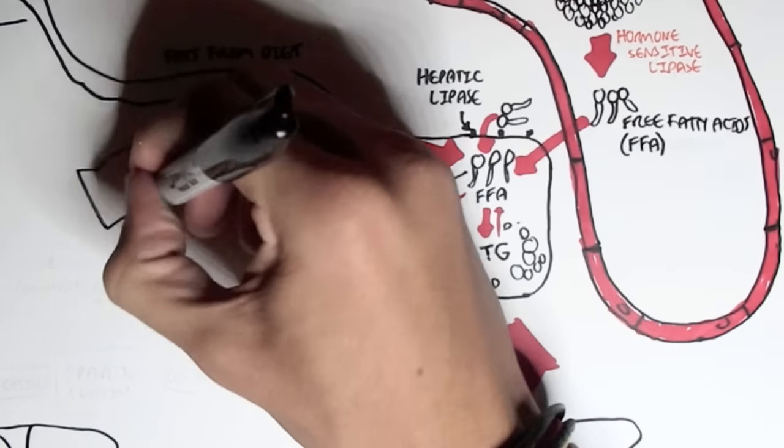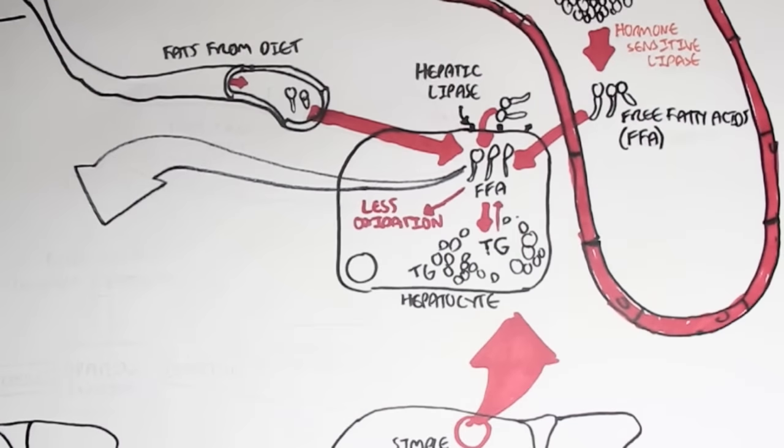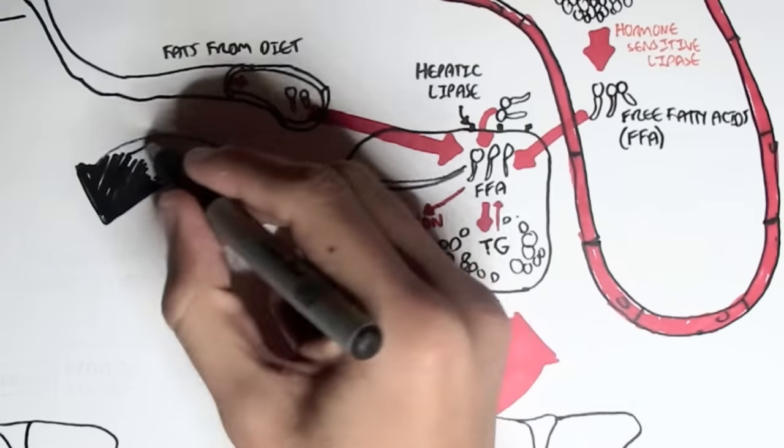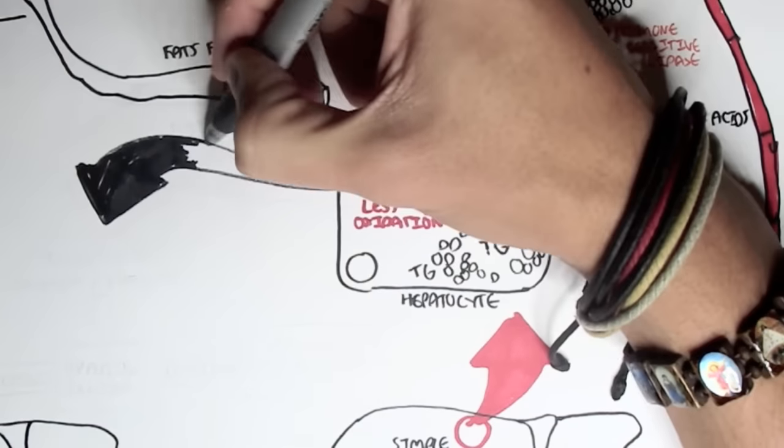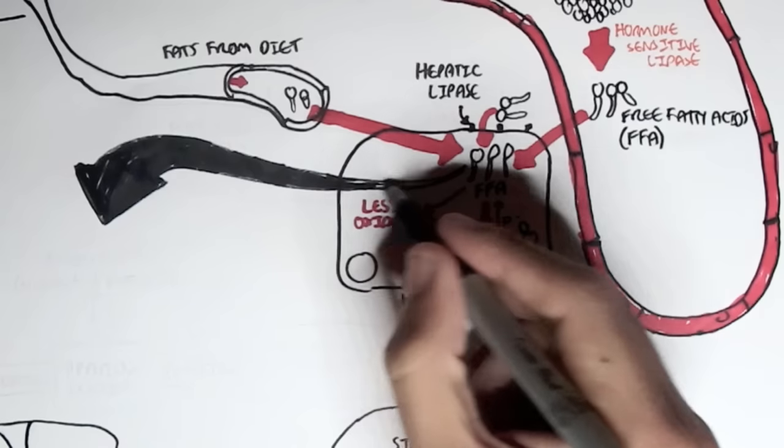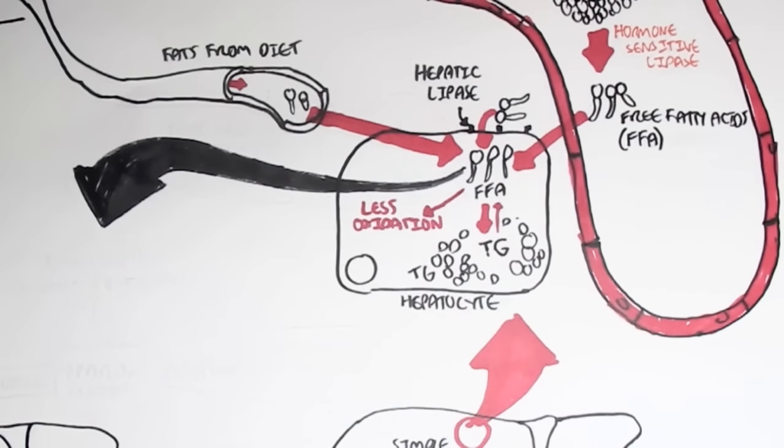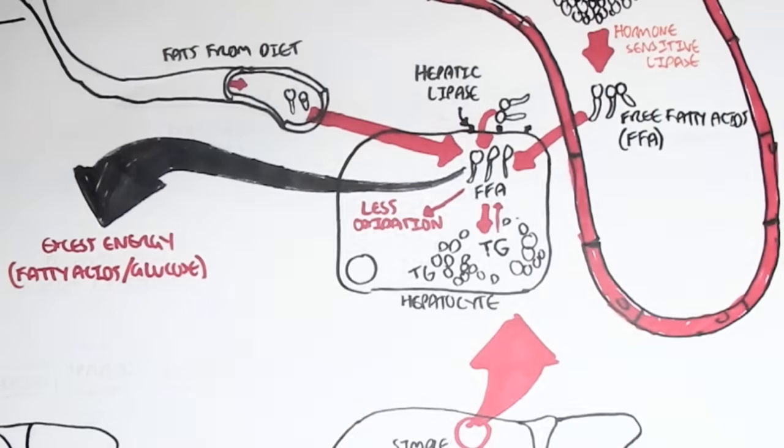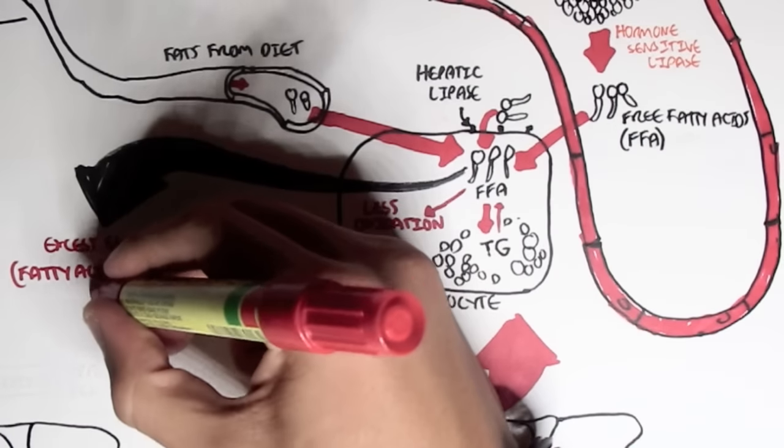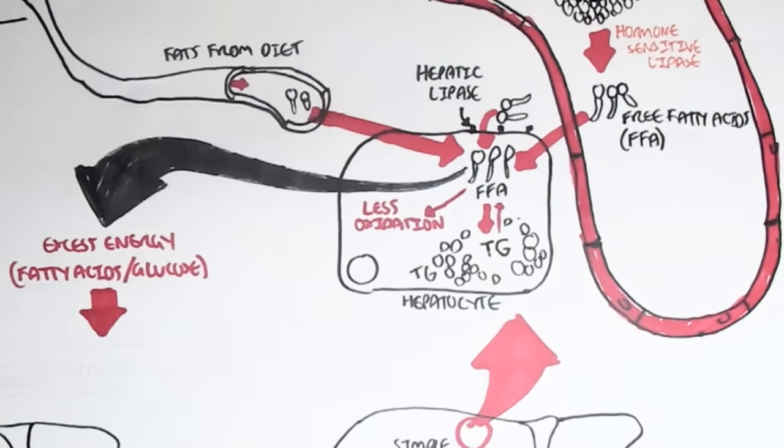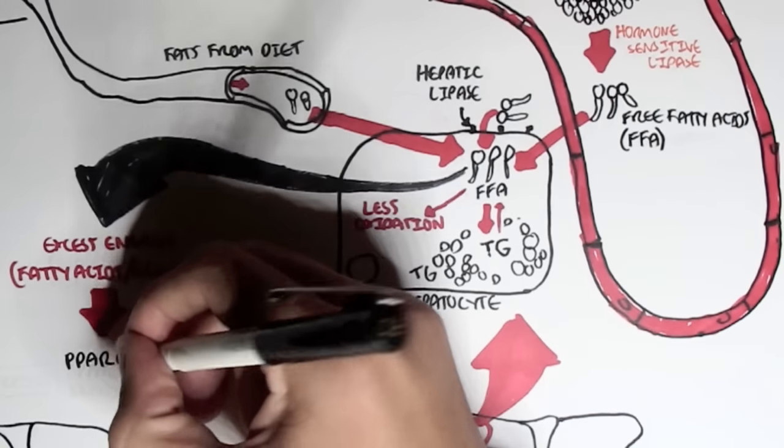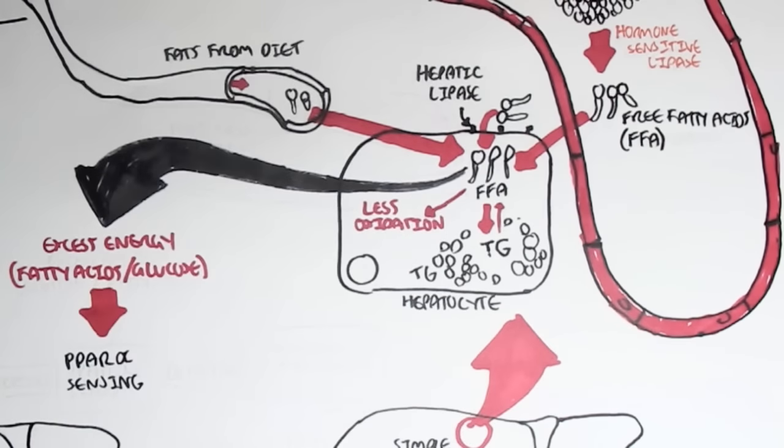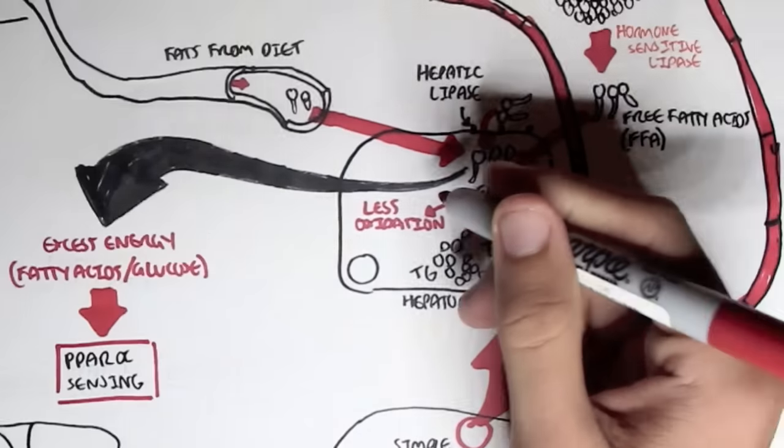So why is there less oxidation? What regulates this? Well, let's have a look at one process. When we have excess energy, as in fatty acids or glucose, it goes through a sensing process within the liver. The peroxisome proliferator activated receptor alpha, or PPAR alpha, is a nuclear receptor protein and is a major regulator of lipid metabolism within the liver.